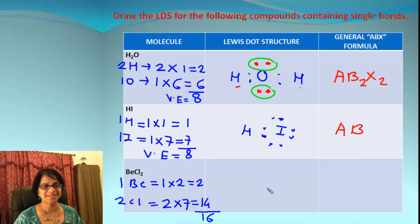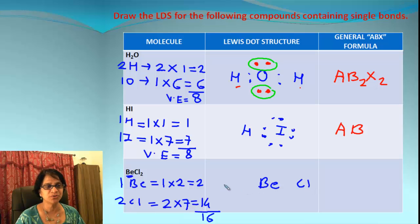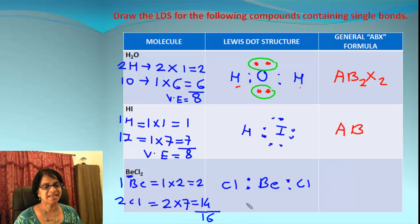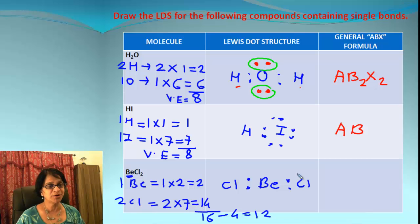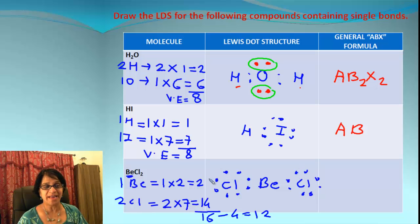Out of beryllium and chlorine, the central atom is obviously beryllium — it has the fewest atoms — and we put 2 chlorines on either side of beryllium. Next step: show the shared pair of electrons between beryllium and each chlorine. Out of 16 electrons, we used 4. That means 12 electrons are still remaining, and we are going to put those around each chlorine until every chlorine has the octet complete. We end up with 8 and 8 electrons around the chlorines — total is 16, so we are done.